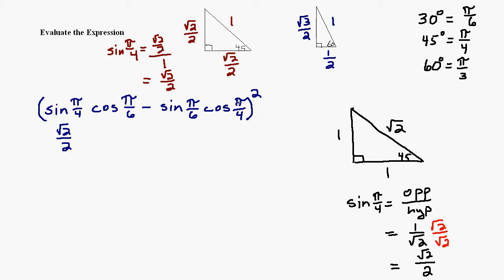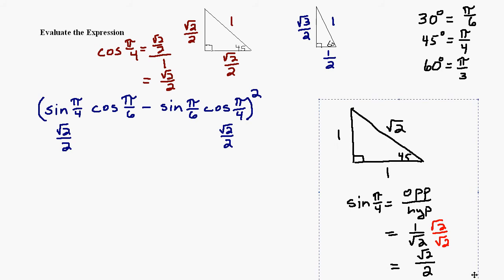Let's also do the cosine of pi over 4. We can see pretty easily that the cosine of pi over 4 is going to be the same as the sine. The cosine of pi over 4 is adjacent over hypotenuse, and the adjacent side and the opposite side are equal, so adjacent over hypotenuse gives the same answer. The sine and the cosine in a 45-45-90 are equal. That takes care of the pi over 4 part.